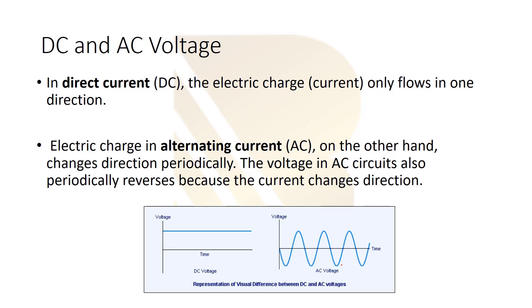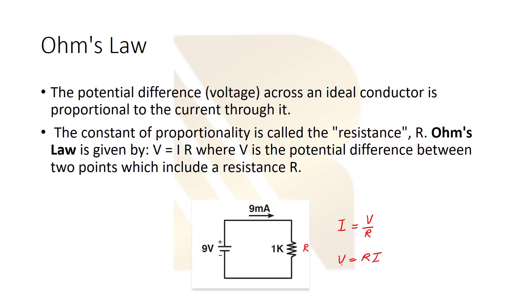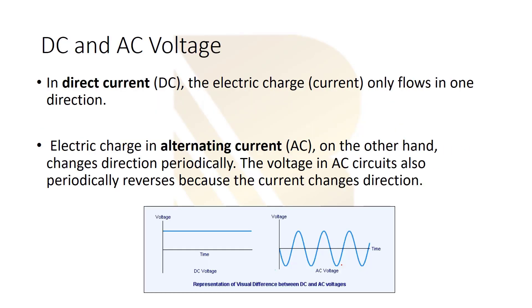So what about DC and AC voltage? This voltage sometimes is constant, so we call it DC voltage or DC current. For example, let's talk about the current. We say in direct current DC, the electric charge current only flows in one direction. As you see in this picture, the voltage is only flowing in direction from left to right and it's not changing, it's always constant. So we call it DC current.